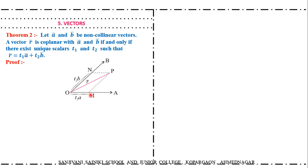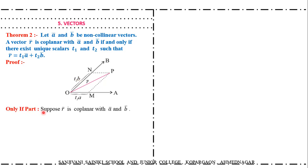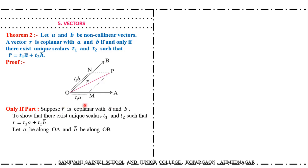Draw the figure. O·M bar is T1·A bar because O·A bar is A bar and O·M bar is collinear with O·A bar, so it must equal T1 times A bar. Similarly O·B bar is B bar and O·N bar is collinear with O·B bar, so it must equal scalar multiple T2 times B bar. Now suppose R bar is coplanar with A bar and B bar; we have to show there exist scalars T1 and T2 such that R bar equals T1·A bar plus T2·B bar.